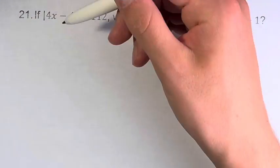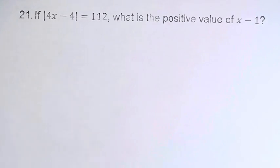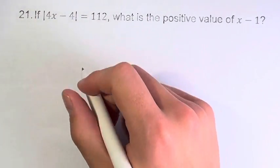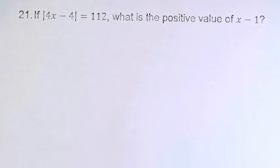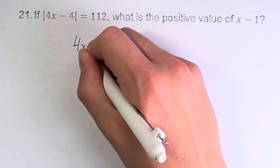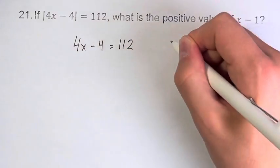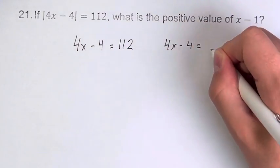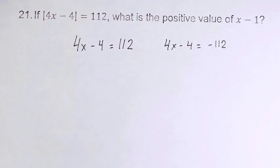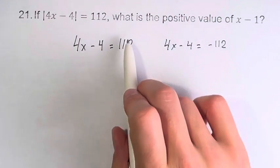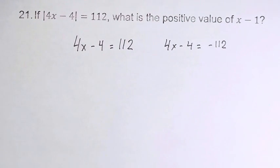So first of all, let's just solve this equation. We have the absolute value of 4x minus 4 is equal to 112. That means that 4x minus 4 equals 112, and it also equals negative 112. By dropping the absolute value, we have to take the positive value and the negative value of the other side.